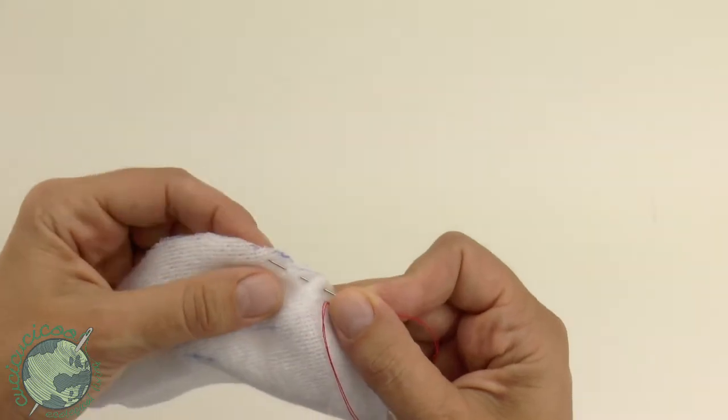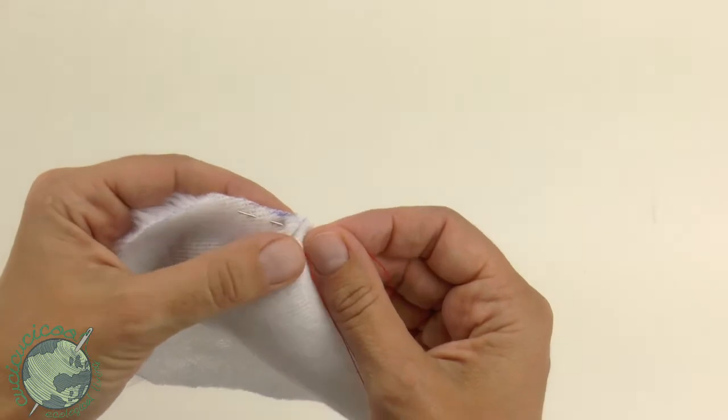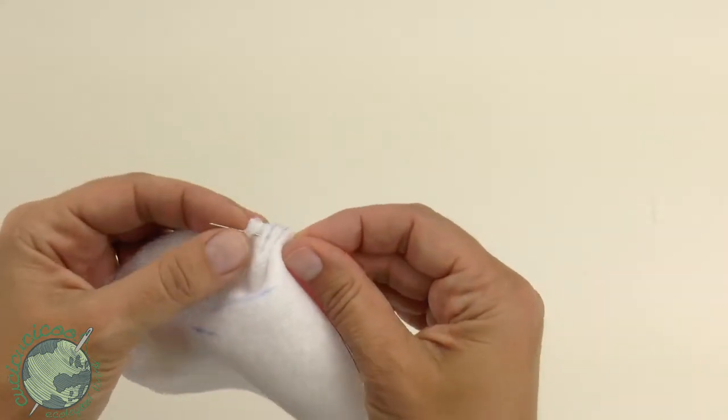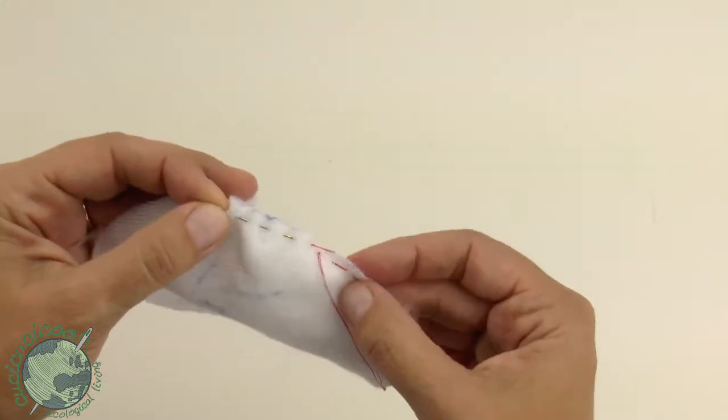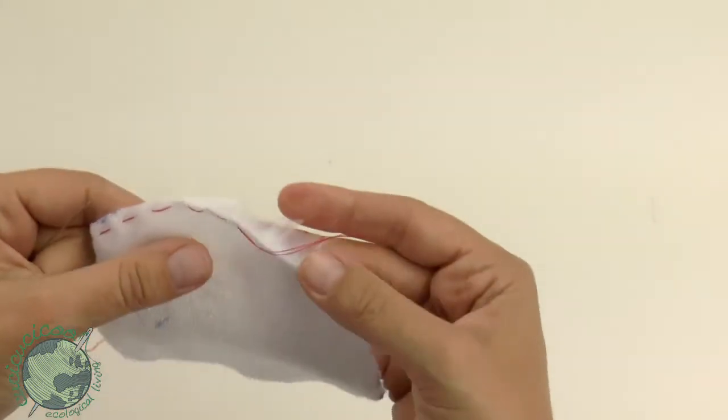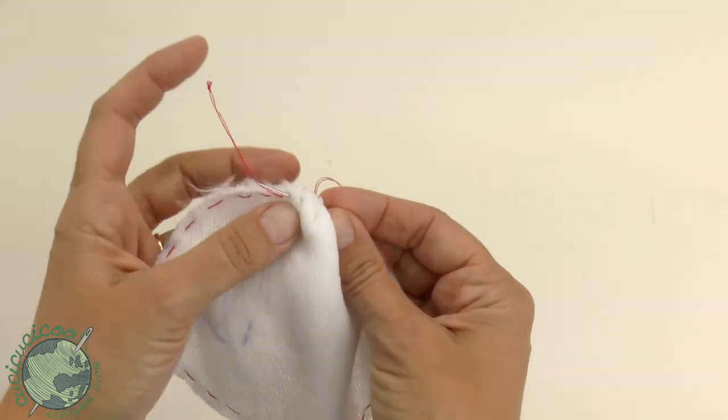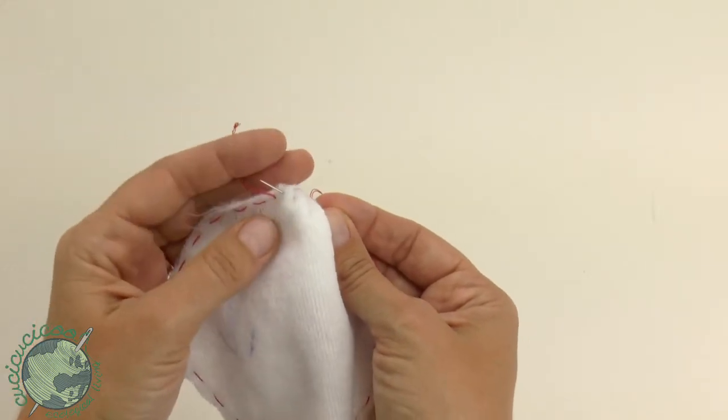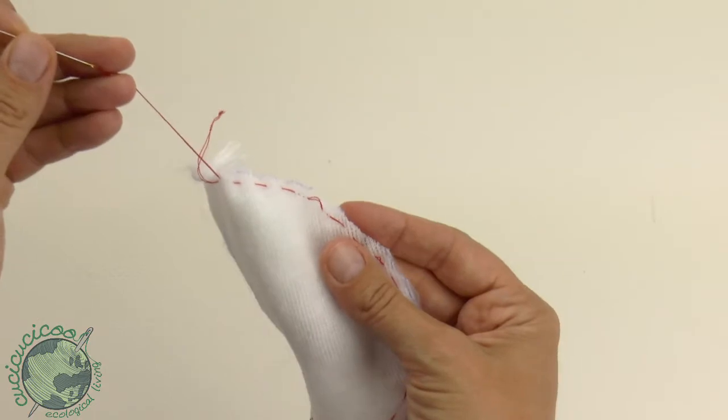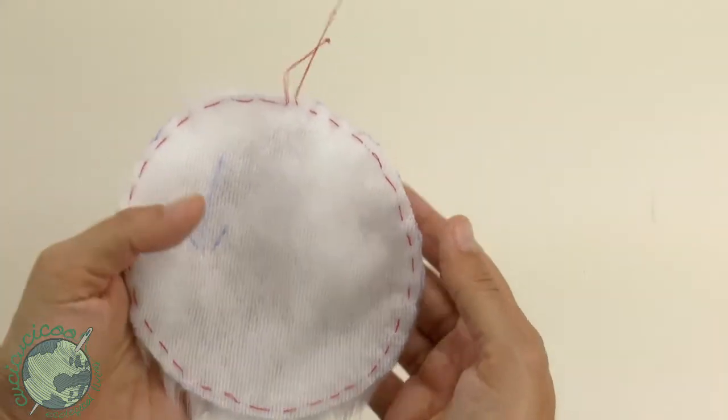Try not to catch the fur underneath. Try and get superficially on the surface here without catching the actual fur underneath. You can do quite a few stitches at once and then pull through. Just make sure that you don't pull the end here all the way through. So now you can see that I've worked my running stitch right back to where the original end of the thread is. So I pull through. I've made an entire circuit around the edge of my circle.